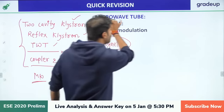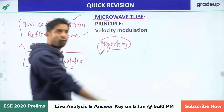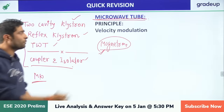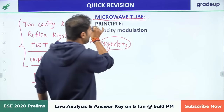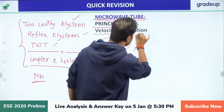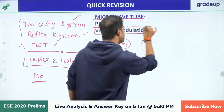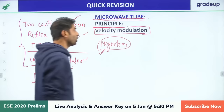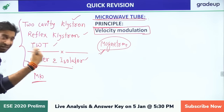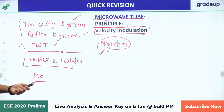First we will discuss the microwave tube. The principle behind the microwave tube is velocity modulation. What is velocity modulation? We will discuss that in the next slide.